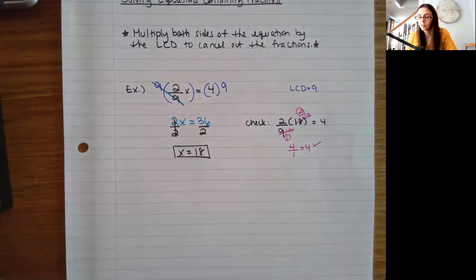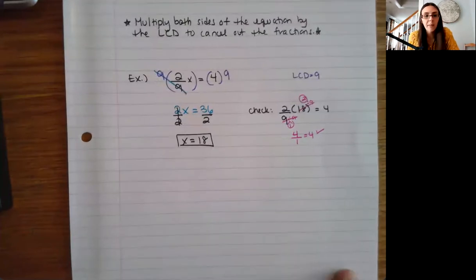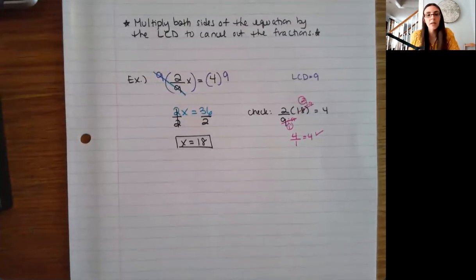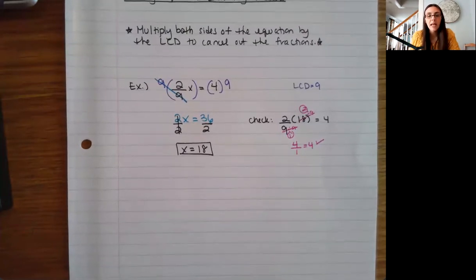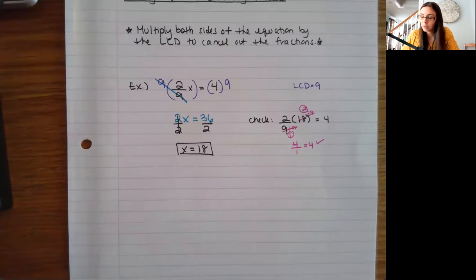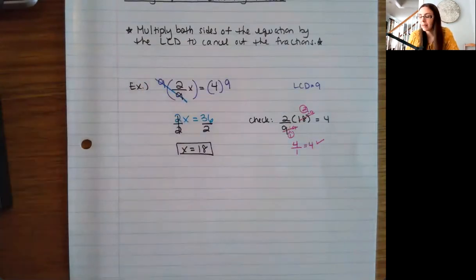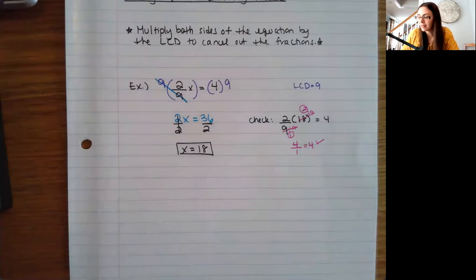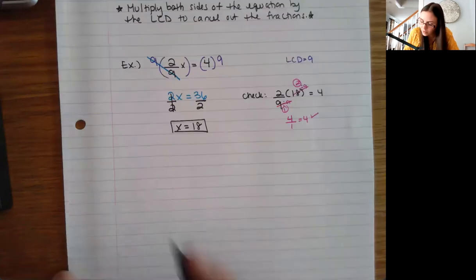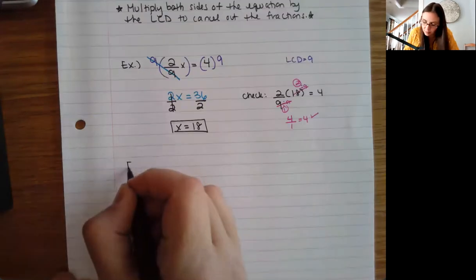So this is the strategy I'm going to use: multiply both sides of the equation by the LCD and multiply throughout. An easy thing to do is the simplifying first — instead of running the division that way, I'm just going to cross things out that are the same. So let's try another example.